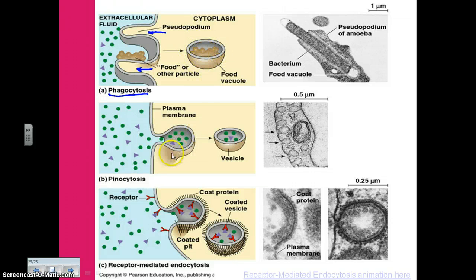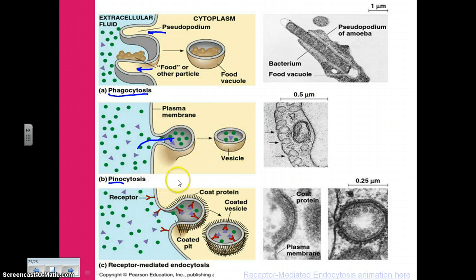The second is actually similar but in the opposite direction — pinocytosis — where the membrane contracts inward. The particles that are outside move into that pocket, forming another food vesicle. This is usually used primarily for liquids.